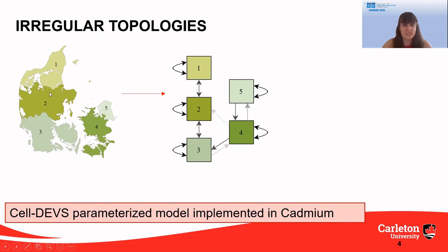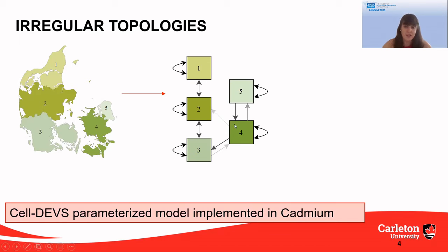So region one is a neighbor of itself and region two. Region two is a neighbor of region three. And sometimes the relationship is not bidirectional — for example, if we think about continents and current restrictions, we may have visitors from Canada that are allowed to go to the U.S., but not the other way around. In other situations, the relationship between one geographical space and another is stronger in one direction than the other. We can model that with irregular topologies, meaning a cell space that does not have the same relationship in both directions, and where not all cells have the same type of neighborhood.